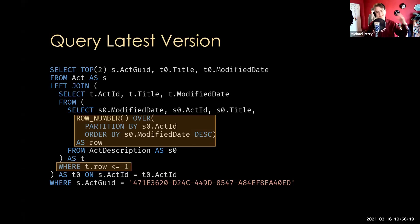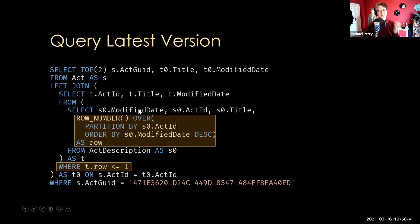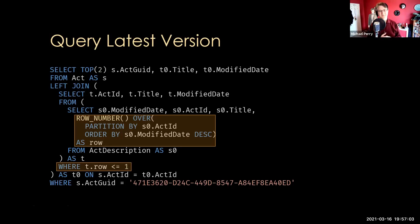If you also include in that index the modified date and the title — including all the extra columns not already part of the index — then after the index scan it's able to complete the operation from the index itself without going back to the main table. Once you've done that, measure your performance and you'll find it's much improved. Still not as fast as just getting the most recent version directly, but it's usually fast enough for the types of applications we build every day. If you find it's not quite enough, the next step is to create a projection from the immutable tables into current state — then you can select against that all day long for a really fast operation.